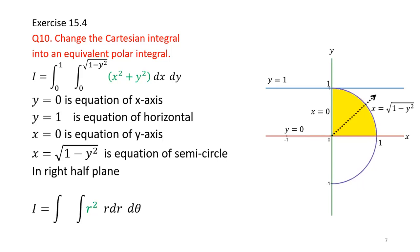To calculate the limits of r, we pass an arrow starting from the origin and crossing the region. Since our region includes the origin, the lower limit of r is always equal to zero — whenever your region includes the origin, the lower limit of r is always zero. For the upper limit of r, we calculate the distance of the exiting boundary from the origin. The distance of each point of the exiting boundary from the origin equals 1, because this is the boundary of a circle with center at the origin and radius 1. So the limits of r are 0 to 1.